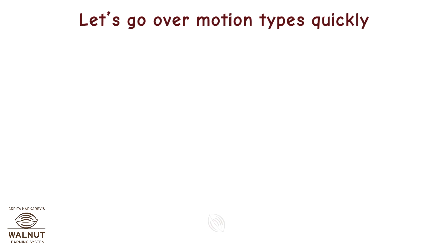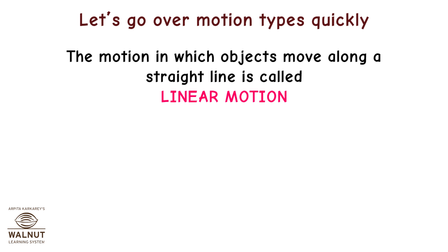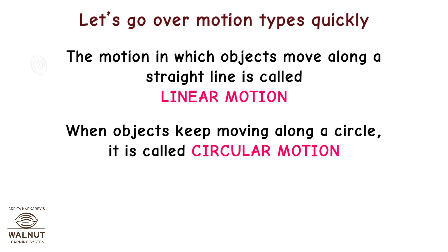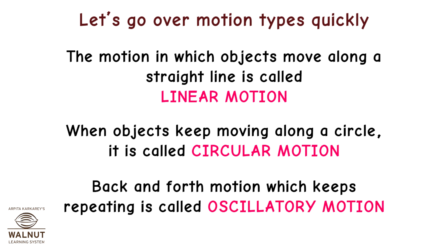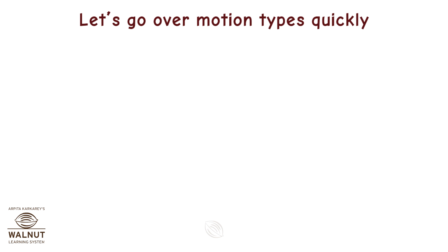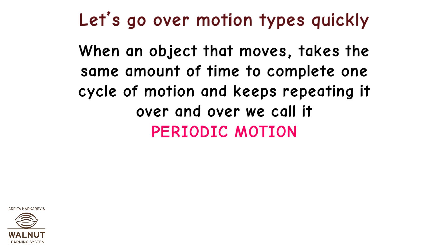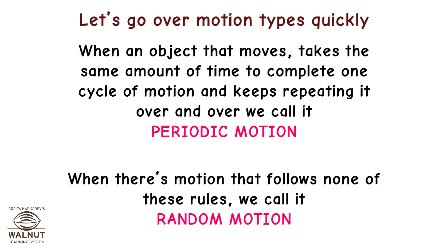Let's go over motion types quickly. The motion in which objects move along a straight line is called Linear Motion. When objects keep moving along a circle, it is called Circular Motion. Back and forth motion which keeps repeating is called Oscillatory Motion. When an object takes the same amount of time to complete one cycle and keeps repeating it, we call it Periodic Motion. When there is motion that follows none of these rules, we call it Random Motion.